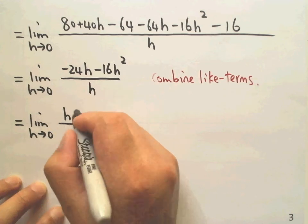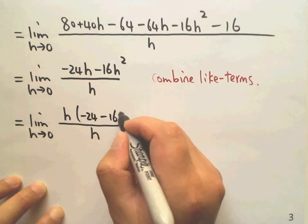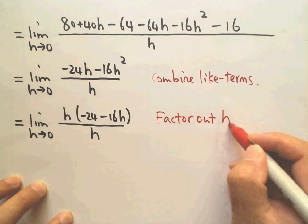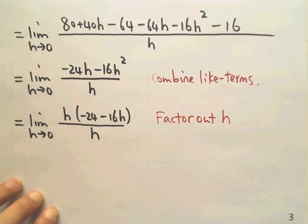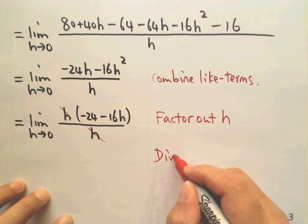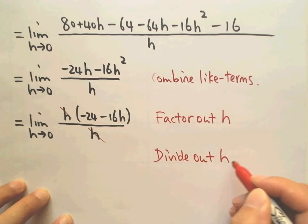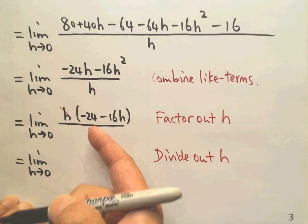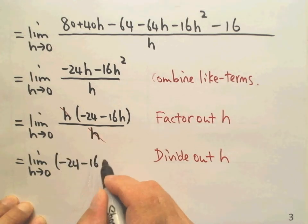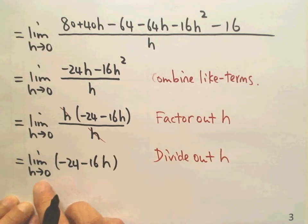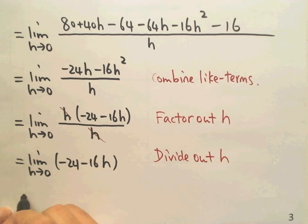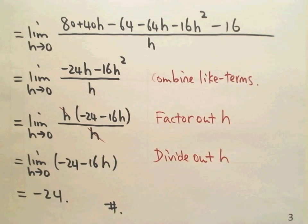We factor out h from the numerator, giving h(-24 - 16h). Then we divide out h, canceling with the denominator. After canceling, we have the limit as h approaches 0 of (-24 - 16h). Since this is a polynomial, we can directly substitute h = 0, and we get negative 24. This negative 24 is the final result. Thank you.